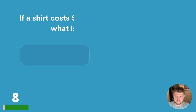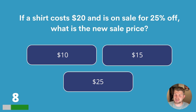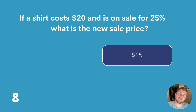Question eight. If a shirt costs $20 and is on sale for 25% off, what is the new sale price? $10, $15 or $25? The answer is $15.